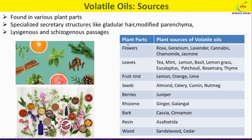This table shows plant parts as well as the plant sources of the volatile oils. Volatile oils are produced from different parts, mainly from the flowers. Very famous flowers such as rose, geranium, lavender, cannabis, chamomile, and jasmine contain essential oils in their flowers.